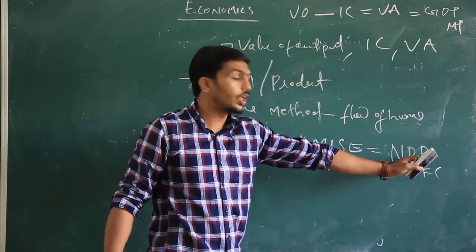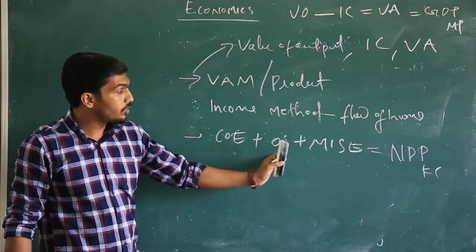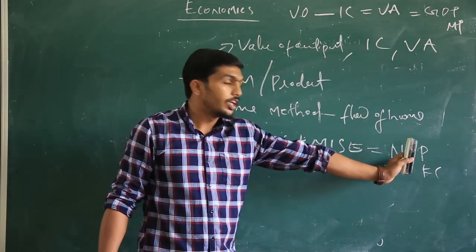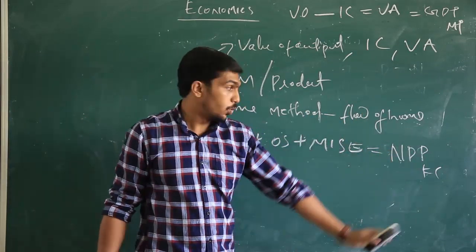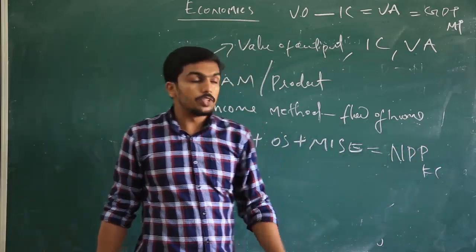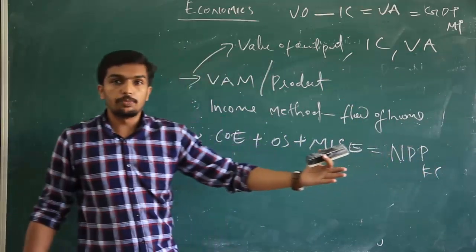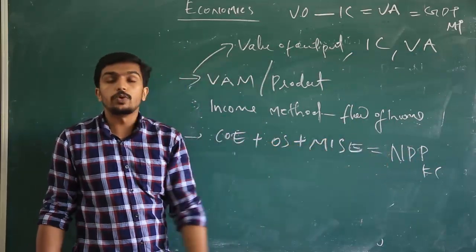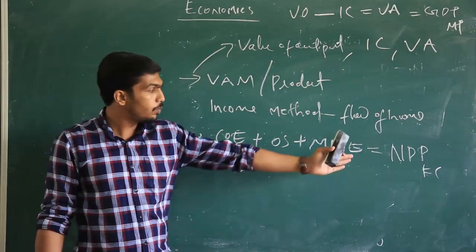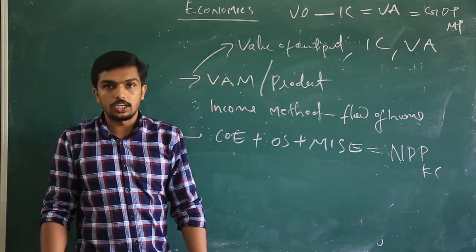This result is exactly equal to our domestic variable. Once we get the NDPFC, we can easily convert it to GDP, NNP, or any other national income aggregate by using the factor cost value, market price value, depreciation, and net factor income from abroad. Any variable we can add to this particular variable, then we can get other national income aggregates.